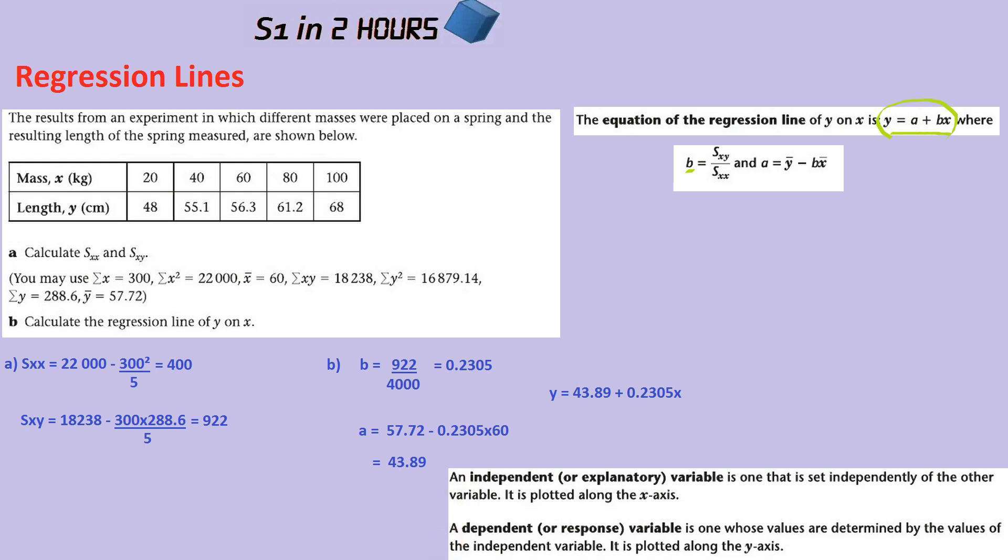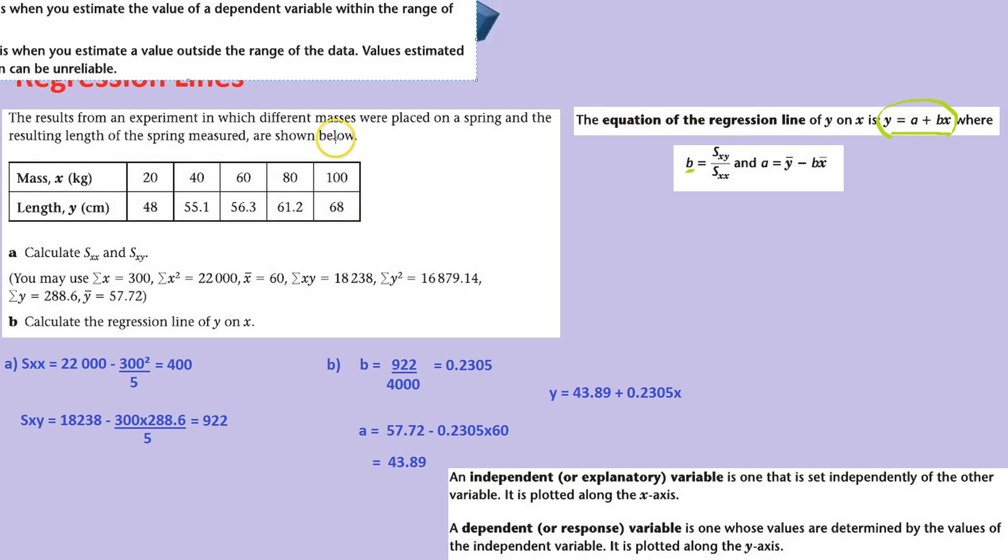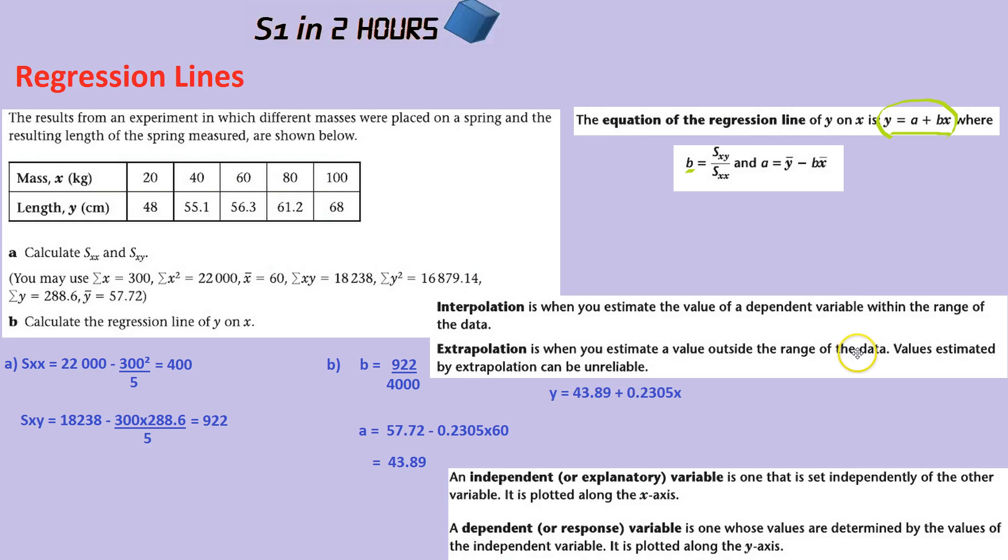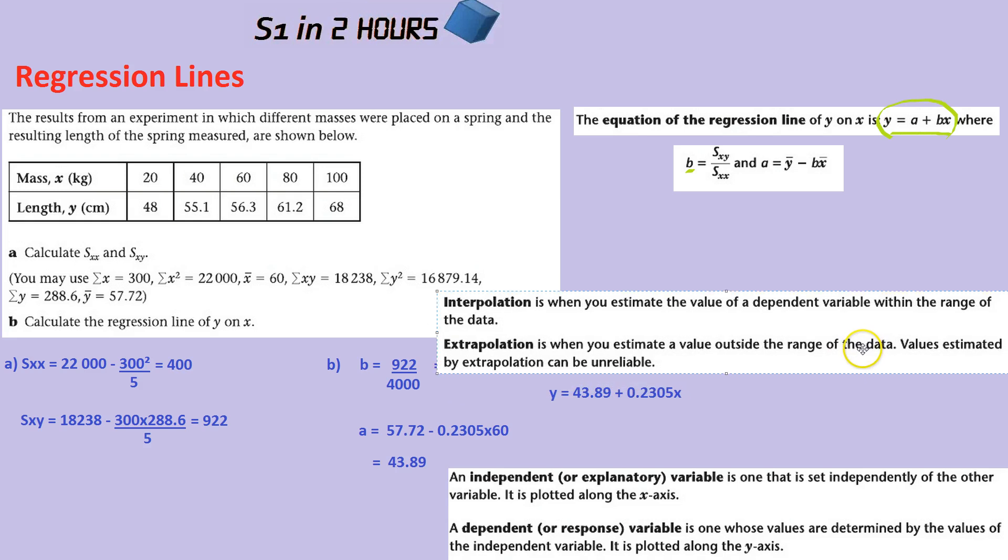The final cool aspect of regression lines is when they ask you about interpolation and extrapolation, and this is really relevant for real life. So what data should we use and when should we use it? Well here's the definitions. Interpolation is when we're estimating the value of a dependent variable within the range of the data.